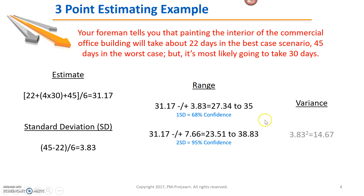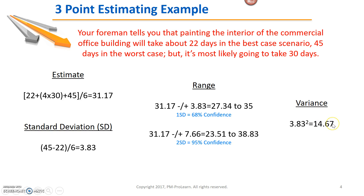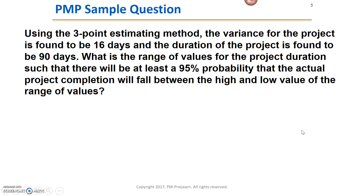The variance is determined by taking the standard deviation and squaring it, which gives 14.67. Alternatively, if the question gave you the variance, as ours did, you take the square root of that to get back to the standard deviation. That's how all those formulas work.